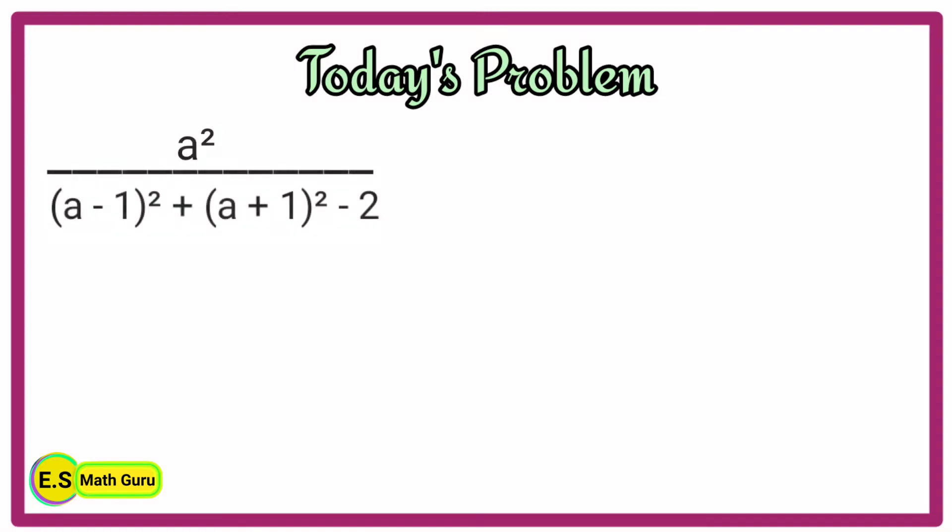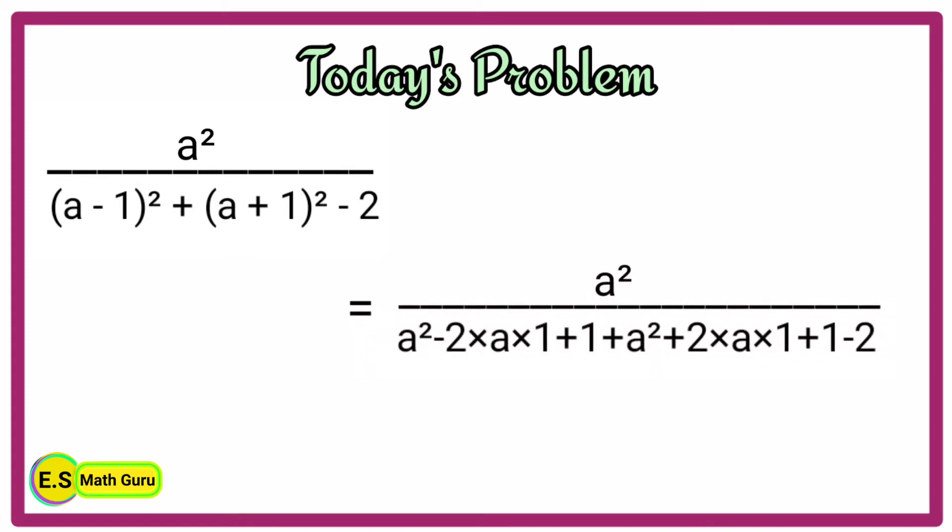Now, let us simplify the denominator by using the identities like (a minus b) whole square and (a plus b) whole square. Then we get a squared divided by a squared minus 2 times a times 1 plus 1 plus a squared plus 2 times a times 1 plus 1 minus 2.